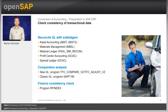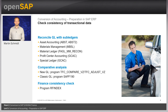The FI consistency check program RFEindex performs checks in AR and AP areas, comparing document headers with line items, searching for missing document headers, and checking clearing transactions. The disadvantage of both RFEindex and the comparative analysis reports is that they may list inconsistencies which have no impact on conversion — not all reported errors need to be corrected. Therefore, these tools require a certain level of technical expertise to correctly interpret the results. Also, runtimes of FI consistency checks and comparative analysis reports can be significant.